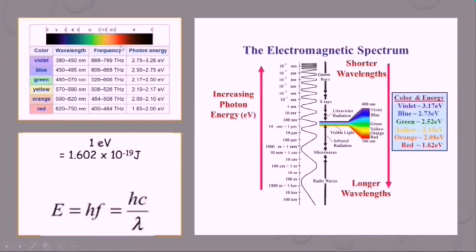Here we have selected only the visible region of the electromagnetic spectrum, and it is quite obvious that we get discrete lines of each wavelength. In this table, we get each individual color's wavelength, frequency, and photon energy. As we move from higher wavelength to lower wavelength, the frequency goes on increasing and hence the corresponding value of energy also increases. Therefore, ultraviolet light is very dangerous, and X-rays and gamma rays are even more dangerous as these are very high-energy radiations due to their high frequencies.